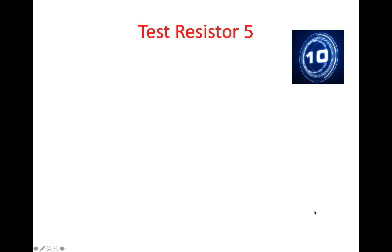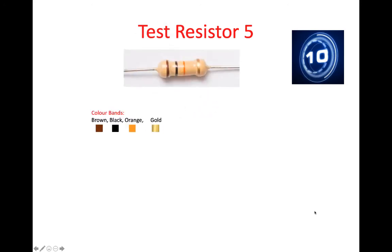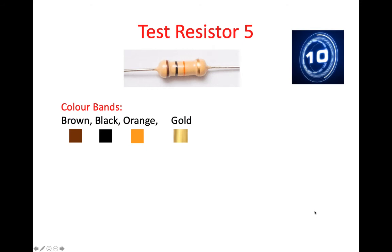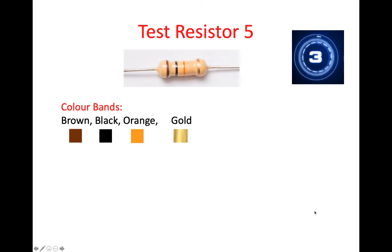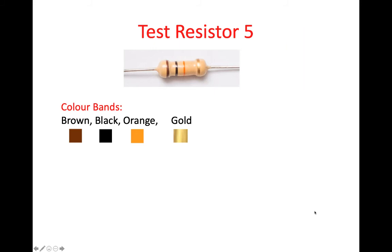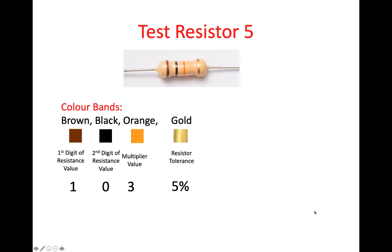Test resistor number five. Here we have brown, black, orange, and gold. Brown, the first digit of the resistance value, has a value of 1. Black has a value of 0, which represents the second digit of the resistance value. And orange has a multiplier value of 3. And gold again is plus or minus 5%.